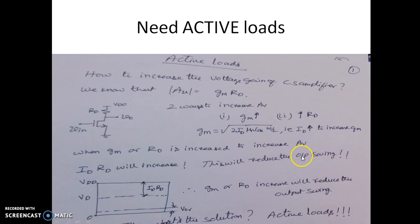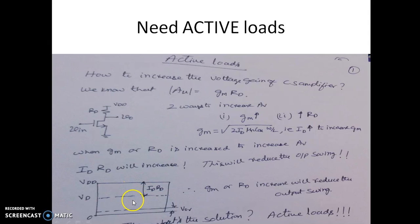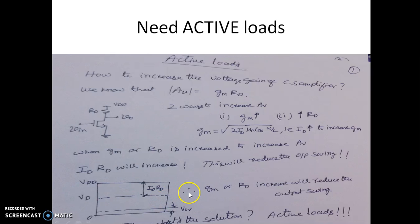Let us see how this will reduce the output swing. The output is always swinging from 0 to VDD, centered at the drain voltage VD. As we increase the value of RD or the value of ID to increase the gain, this drop increases. When this drop increases, the available swing from VD to VDD keeps on reducing. We also need to dedicate the overdrive voltage for this MOSFET to remain in saturation. So increasing GM or RD will actually reduce the output swing.